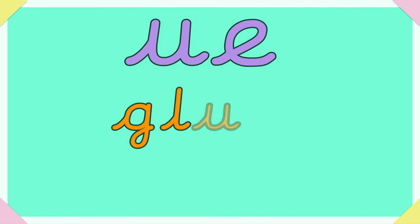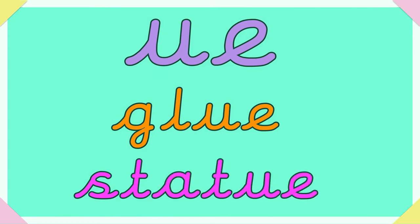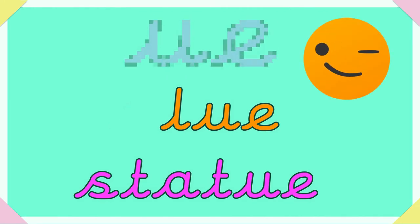They are making a different sound in each word. Glue has the OO sound and statue has the U sound. So this digraph actually makes two different sounds depending on the words they are in. This video will look at both OO and U.